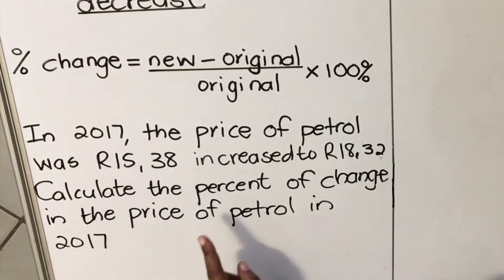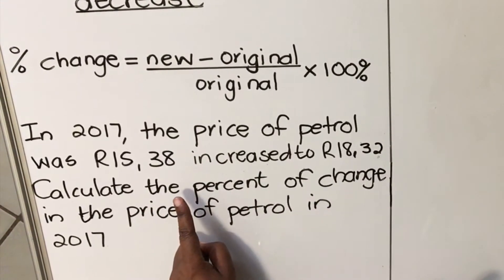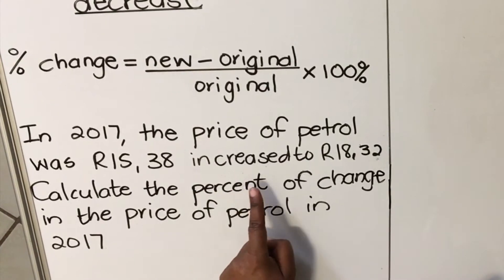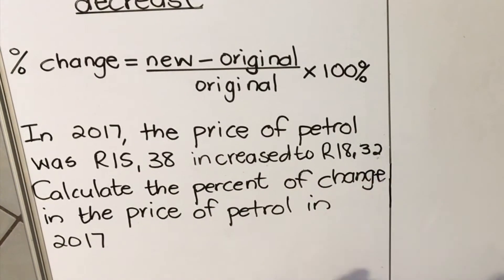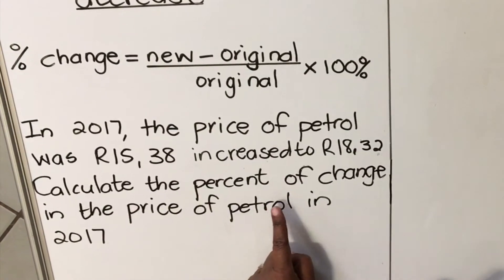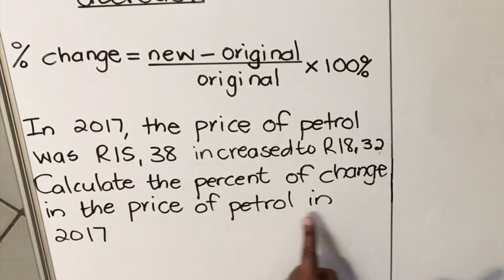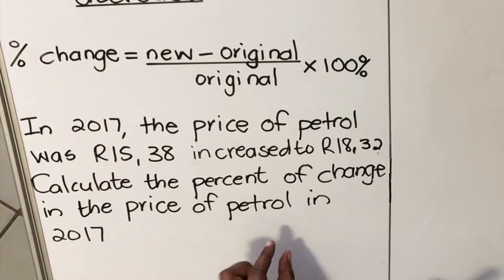In 2017, the price of petrol was R15.38, increased in the same year to R18.32. Then we are asked to calculate the percentage of change in the price of petrol in 2017. They're actually asking you what is the percentage change.